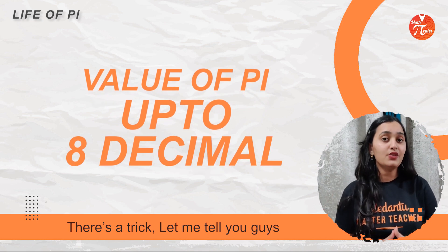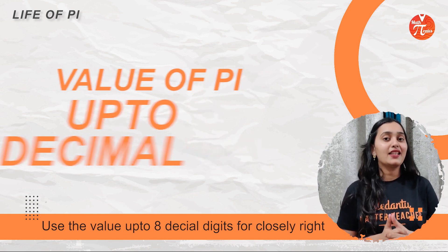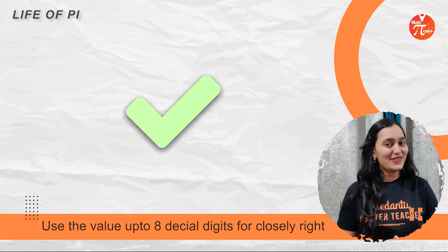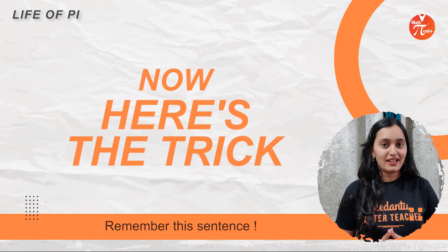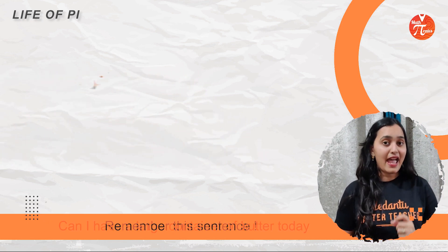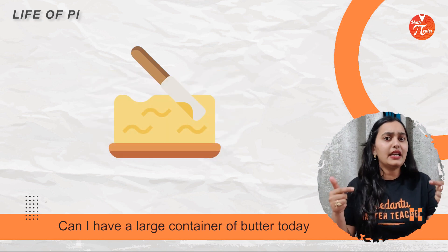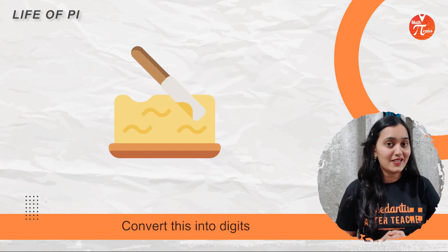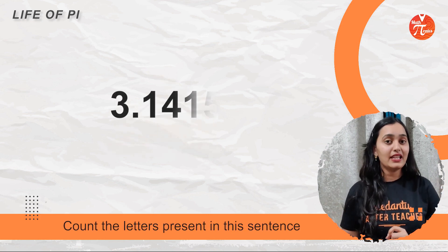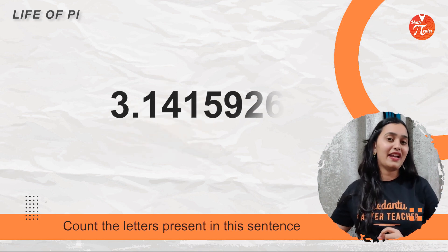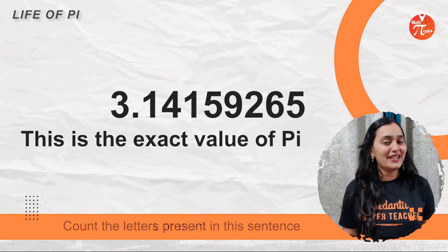If you put the value up to 8 decimal digits, you will get answers very close to correct. Here's the trick — just remember this English sentence: 'Can I have a large container of butter to dig?' Now convert it into digits by counting the number of letters in each word: 3.14159265. This is the value of Pi which you can remember with this simple English sentence.